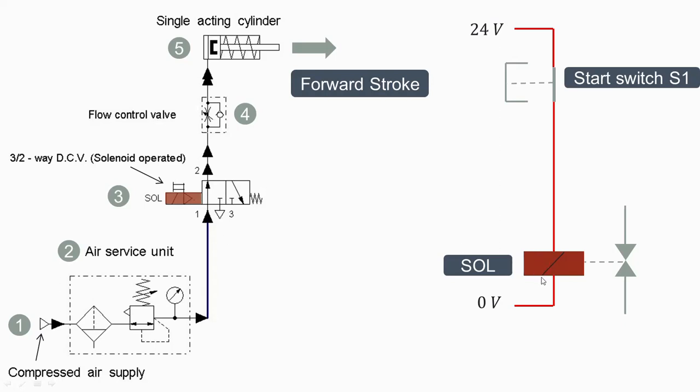When this particular solenoid gets energized then we'll get the left envelope mode and the air from port 1 it will enter into port 2. It cannot flow from this side because this is the closed position.